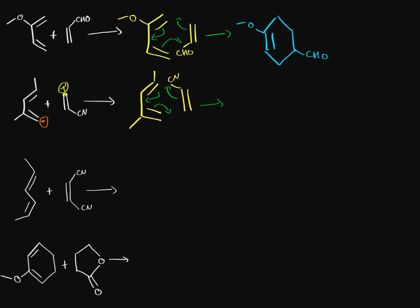This product is going to be stereospecific. We need to determine whether it's wedged or dashed on these two carbons because they're switching from sp2 to sp3 and they're going to be chiral carbons. By the endo rule, this electron withdrawing group wants to be going down and away from us, so the cyanide is going to be going down. The methyl group is facing away from this reaction, so the hydrogen on that carbon — which is facing inwards — is going to be going upwards as a wedge because the cyanide is facing it. Since the cyanide is going down, the hydrogen goes up as a wedge, and the only other option for the methyl is that it's going to be dashed.